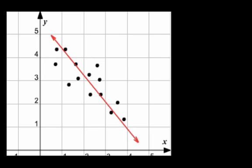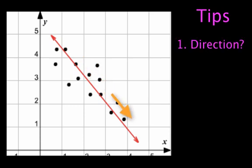So first of all, you see that there is a negative correlation, and you see that because the dots appear to be sloping down. So you know that your line of best fit is also going to slope down.